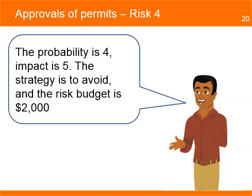The construction manager evaluates the next risk: permit for electric installation might not be approved on time. He estimates the probability at level 4 and impact at level 5. The strategy he feels should be used is to avoid the risk by submitting the permit paperwork and payment ahead of time. The cost to the project for this risk is $2,000.